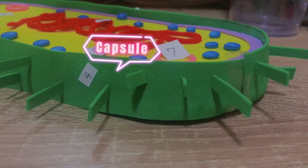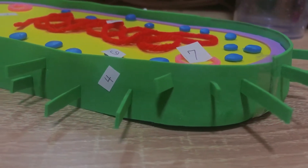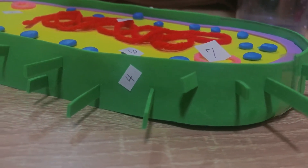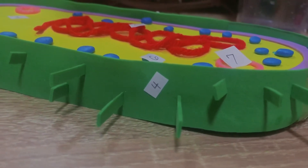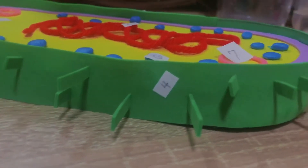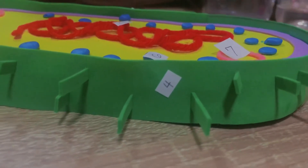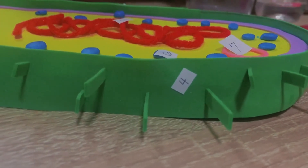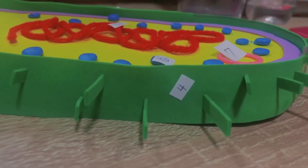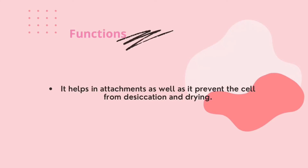The capsule is a 0.2 micrometer thick viscous layer, forming the outer layer to the cell wall. It is also 98% water and 2% polysaccharide or glycoprotein or both. The function of the capsule is it helps in attachments, as well as it prevents the cell from desiccation and drying.